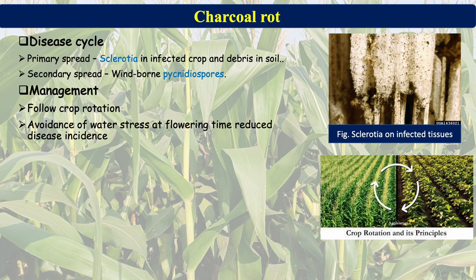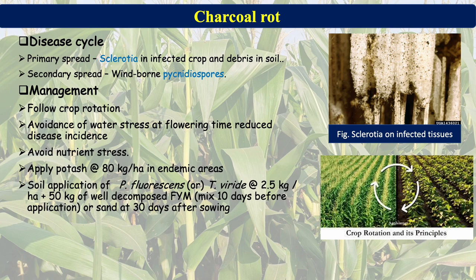For management of Charcoal Rot, follow crop rotation for at least three to four years with non-host crops. Avoid water stress at flowering time to reduce disease incidence. Apply the recommended dose of nutrients; potash should be applied at 80 kg per hectare in endemic areas as it helps develop resistance in plants. Soil application of Pseudomonas fluorescens or Trichoderma viride at 2.5 kg per hectare, mixed with 50 kg well-decomposed farmyard manure, should be applied 30 days after sowing.